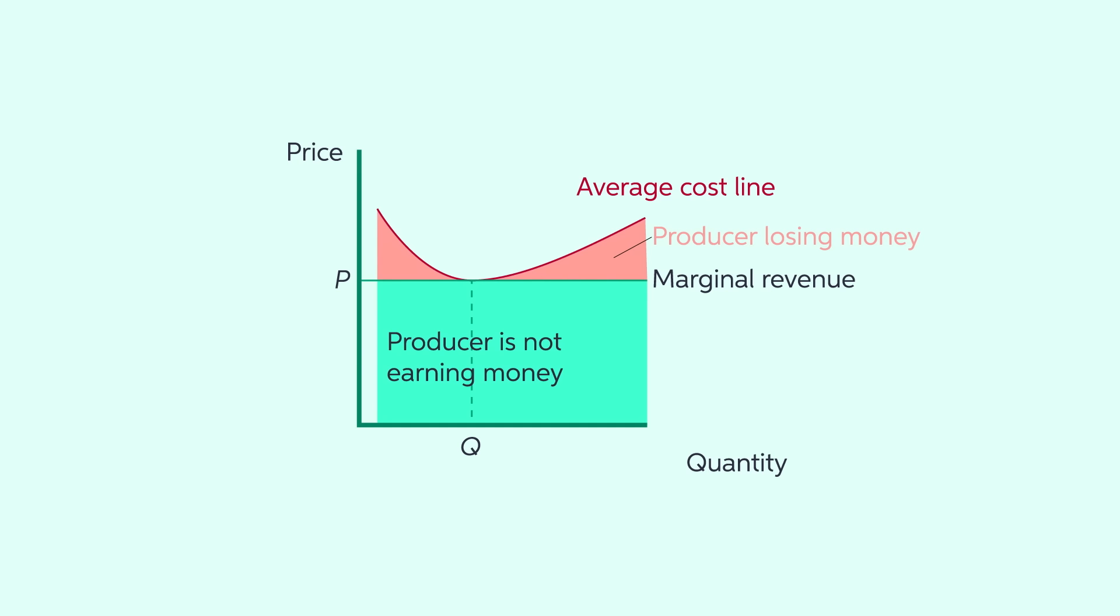In a perfectly competitive market, profit is maximized when the average total cost line equals the price, and therefore profit is zero.